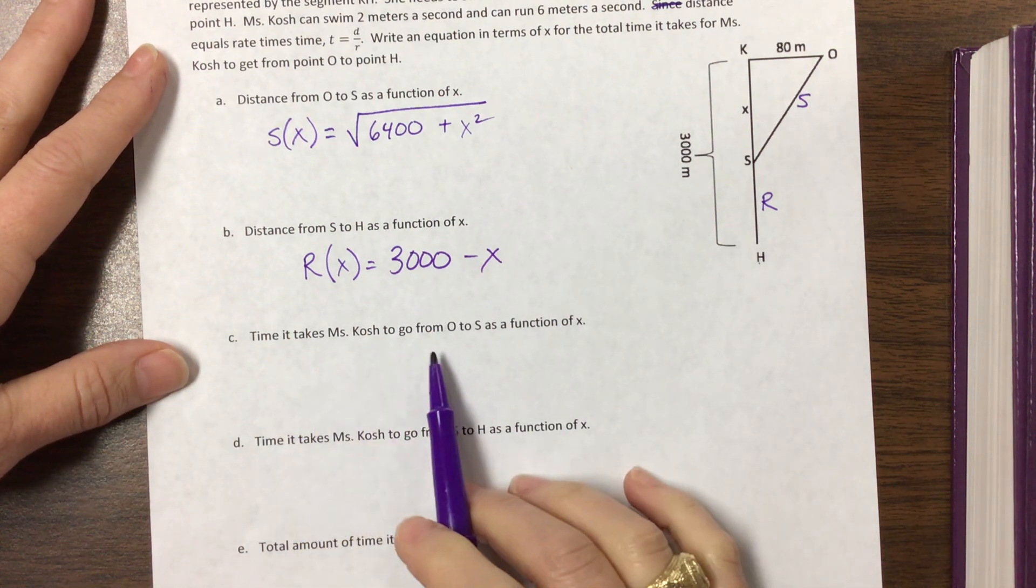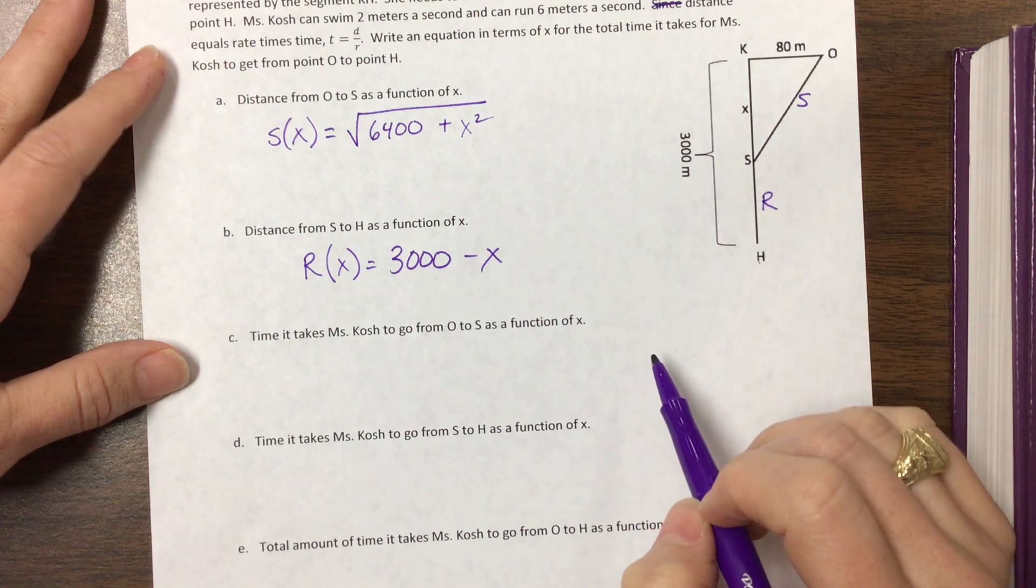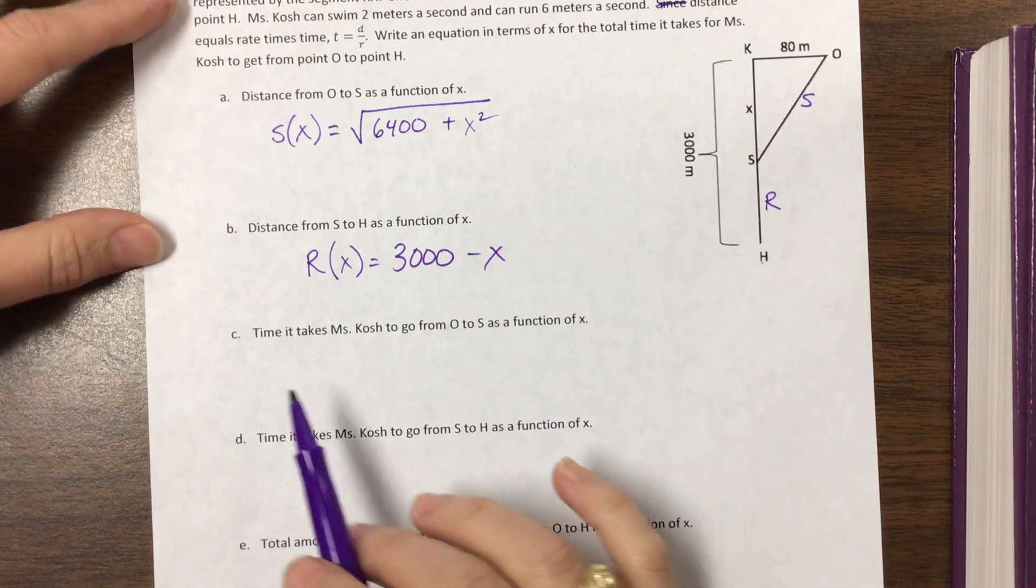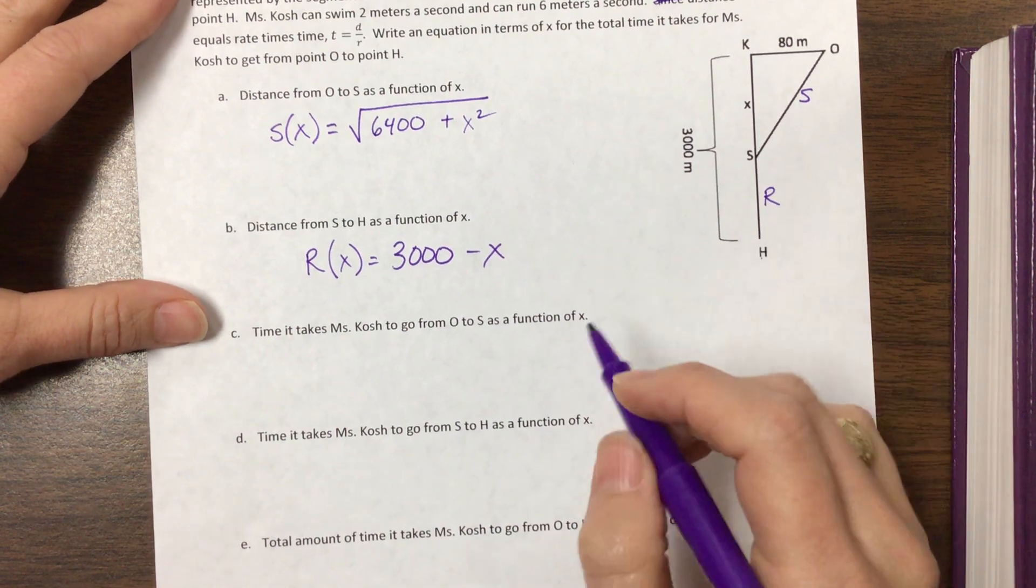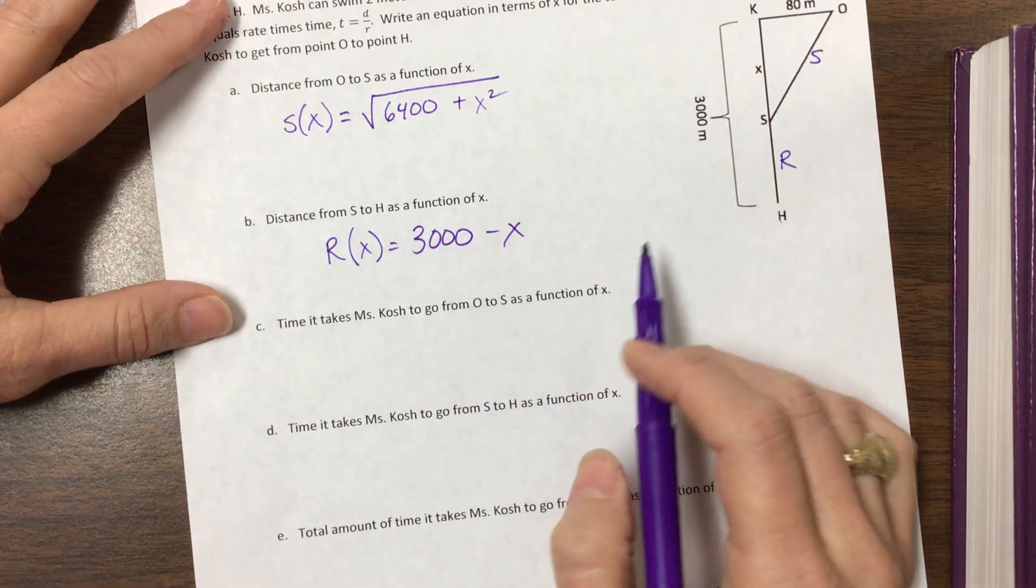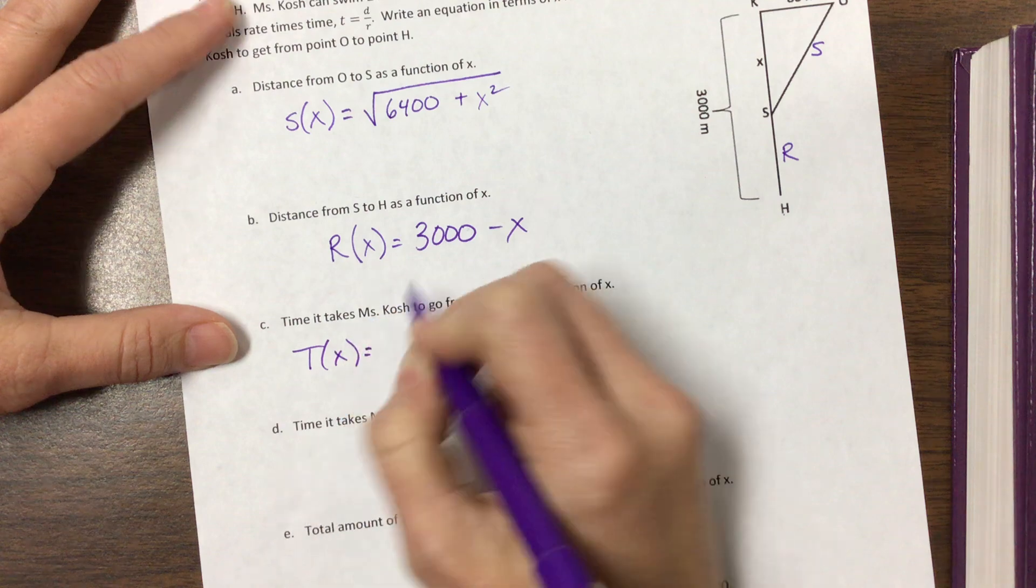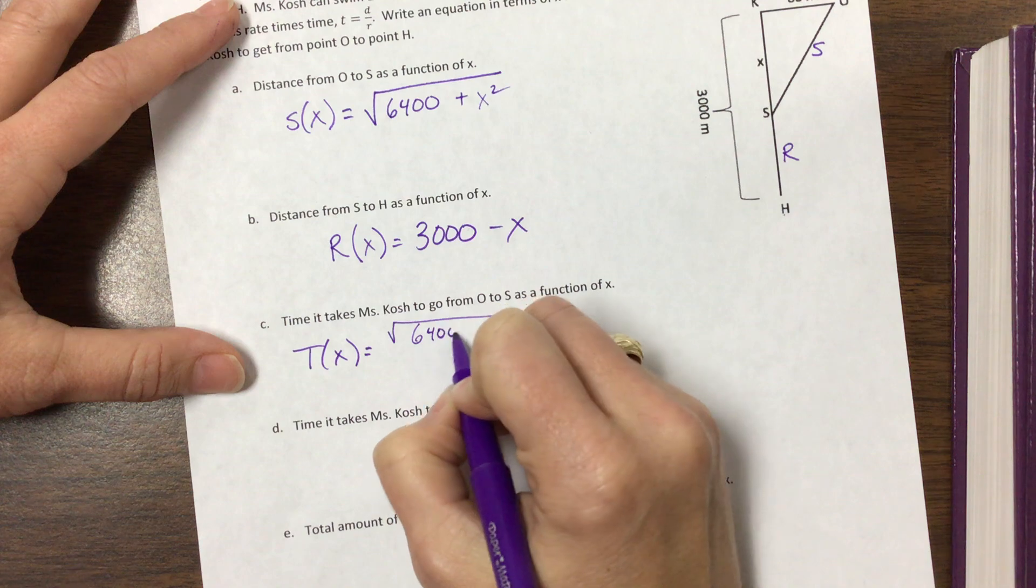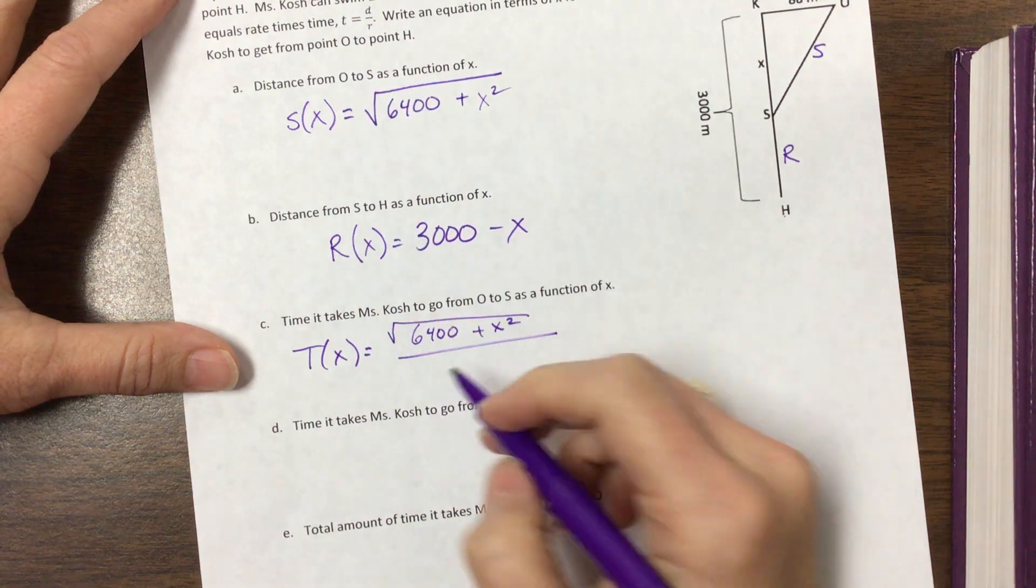Okay and so then the time it takes me from here to here as a function of X. Distance is equal to rate times... hang on. The time it takes me to go from O to S as a function of X. Well okay so here's the distance. The time as a function of X is going to be equal to the distance from O to S, which is this, divided by my rate and it says that I can swim 2 meters a second.